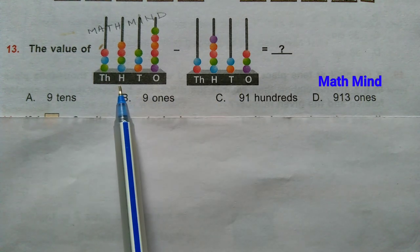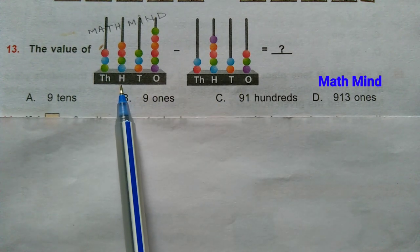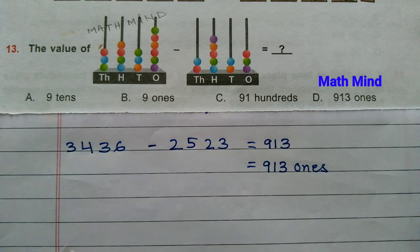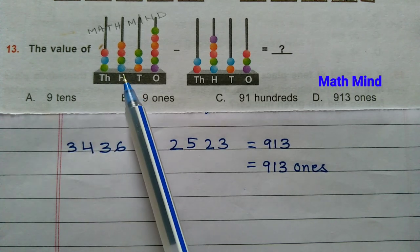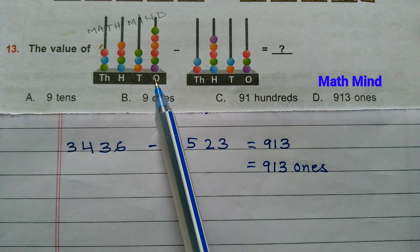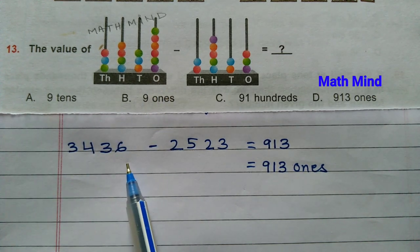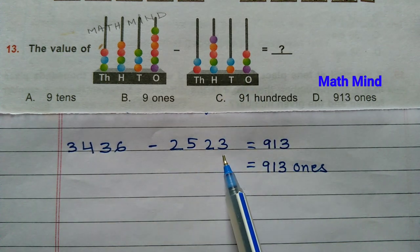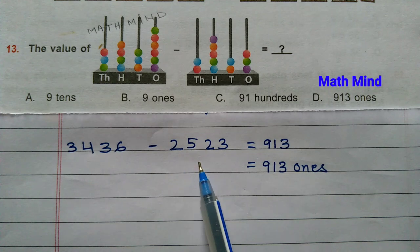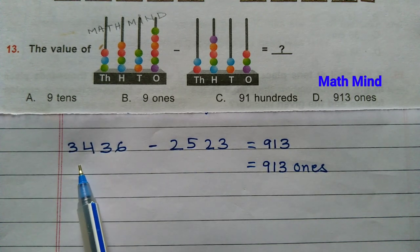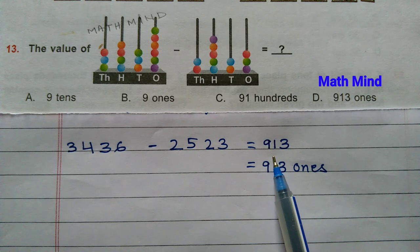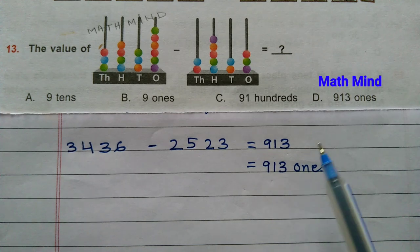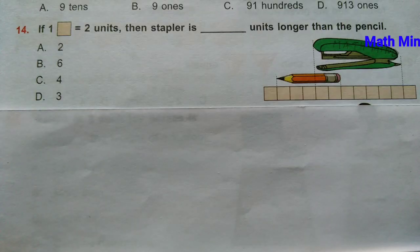Question number 13: Find the value — the difference of both numbers represented through an abacus. In the abacus, the places and digits are shown. The first number is 3436 and the second is 2523. Subtracting 2523 from 3436 we get 913. So option D is correct: 913.